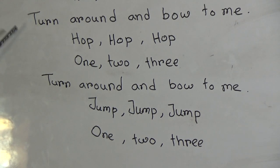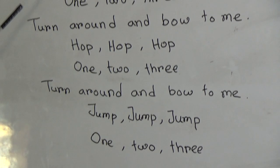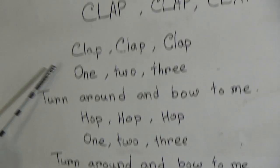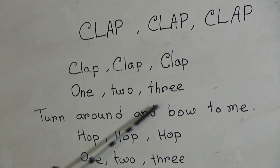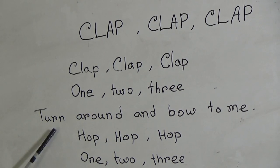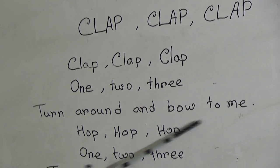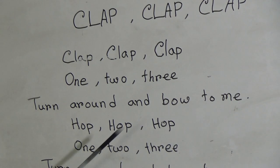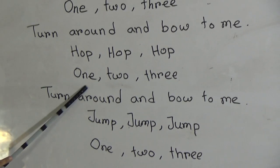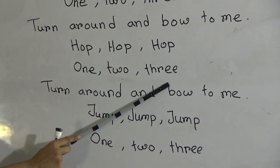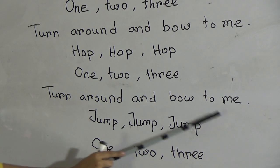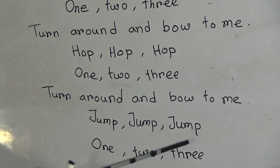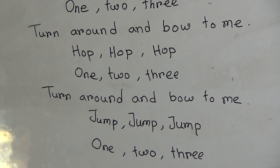Dear students, let's read the poem one more time. Clap, Clap, Clap — 1, 2, 3 — turn around and bow to me. Hop, Hop, Hop — 1, 2, 3 — turn around and bow to me. Jump, Jump, Jump — 1, 2, 3.